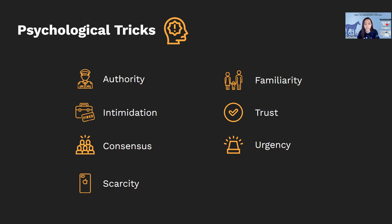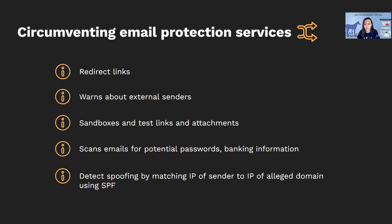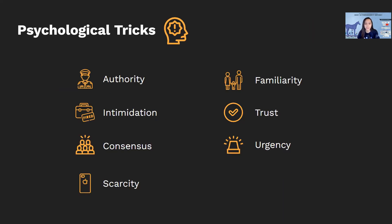Next we have familiarity, which is being aware of the relationships between individuals and the target and how it influences their willingness to do something. Next we have trust, using a figure that the victim trusts or expects to hear from so they're less alert to an attack — for example, impersonating someone the victim is expecting to hear from. And we have urgency, using a threat of a deadline to put pressure on the victim and manipulate them into being less wary in order to complete a task more quickly.